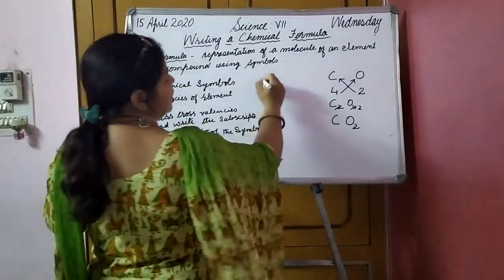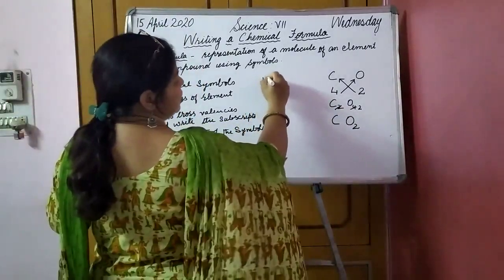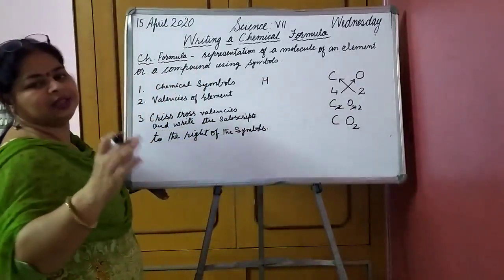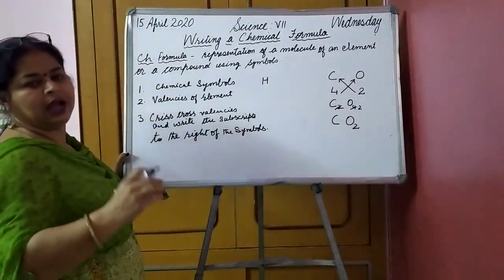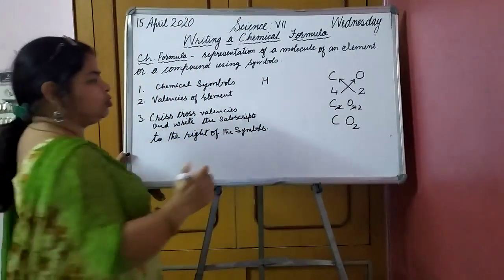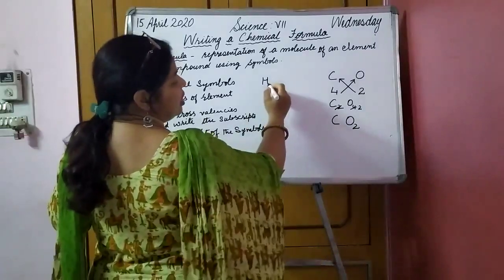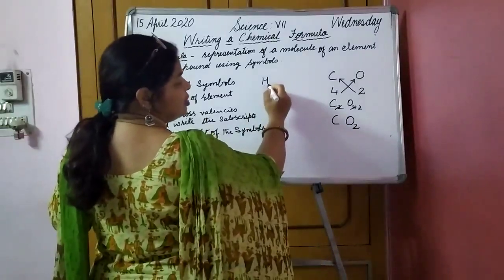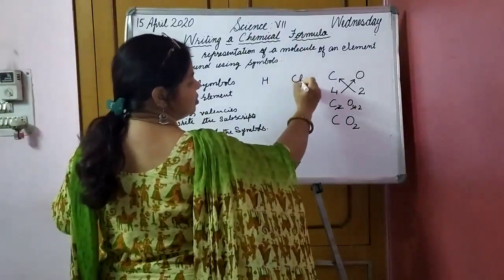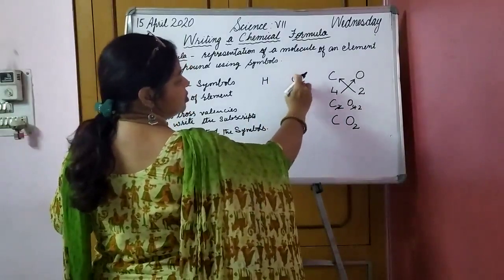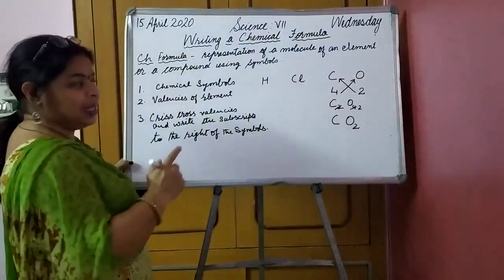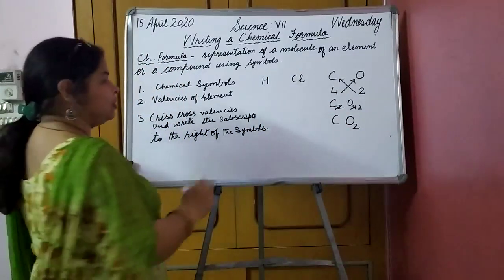Let us take one more example — HCl, the chemical compound hydrochloric acid. How to write down hydrochloric acid. Hydrogen H and chlorine Cl — Cl is the symbol for chlorine.